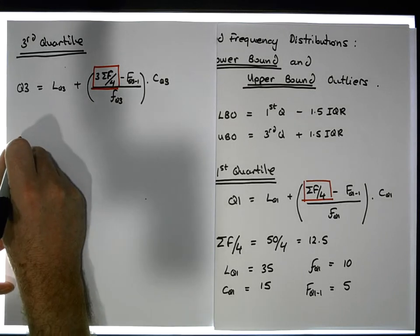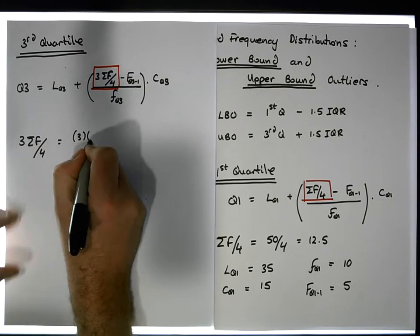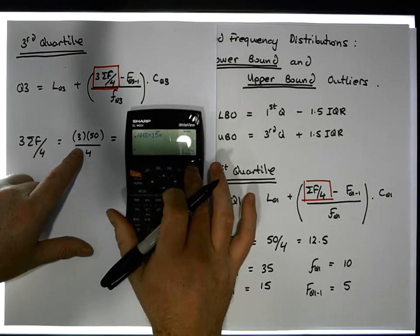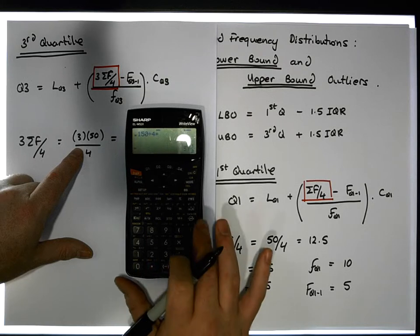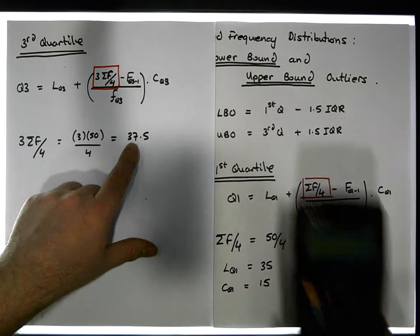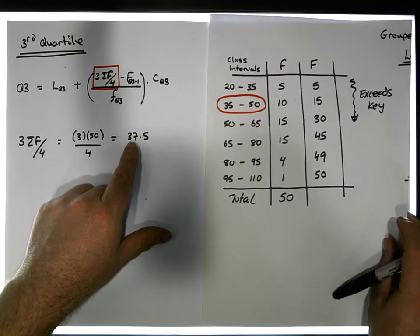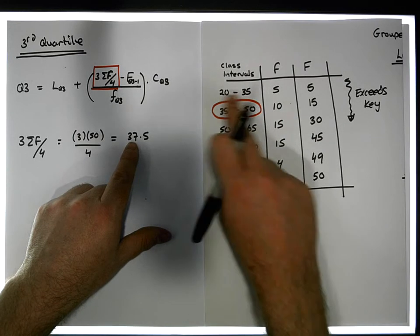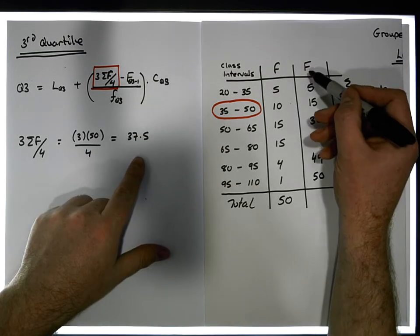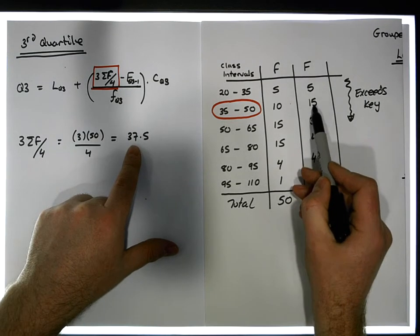So we have three times sigma f over four — that's three times sigma f, which is 50, divided by four. That gives us 150 divided by 4, which is 37.5. So the third quartile should be between the 37th and 38th ordered observations. Walking down the cumulative frequency until we find the first one that exceeds 37.5, we can see that the first cumulative frequency that exceeds it is 45.